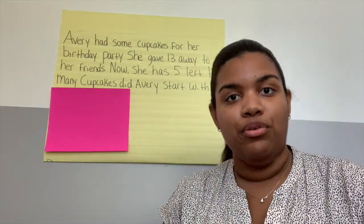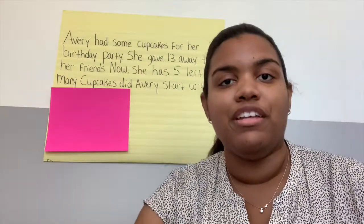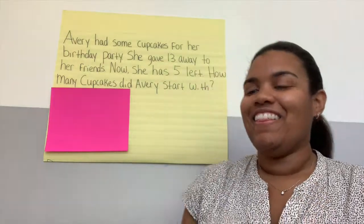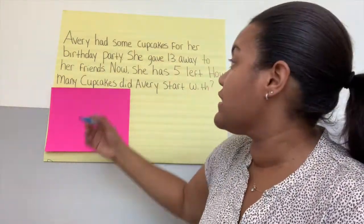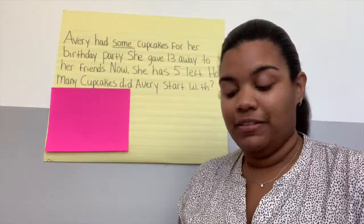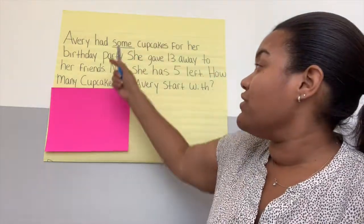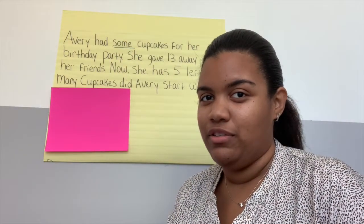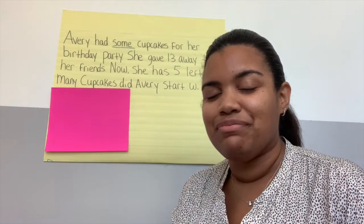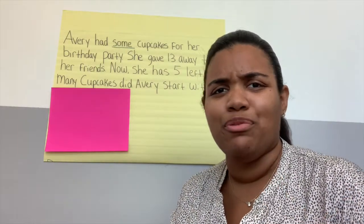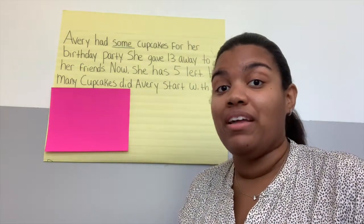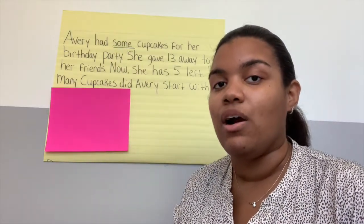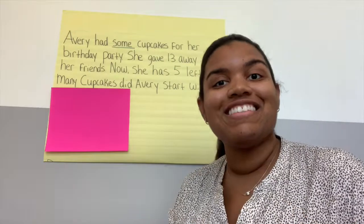I'm going to go through it with you guys and then we're going to underline any important information. Sound good? Thumbs up. Good. Avery had some cupcakes. That word 'some' — that word is not a number, right? Do we know what some is? You're right, we don't know what some is. We need to find that out. When we need to find something out in the problem, that is our unknown.